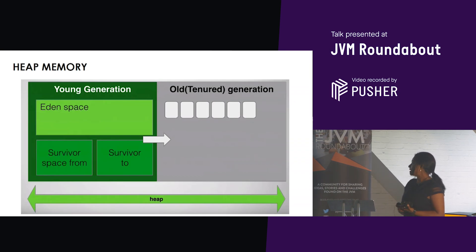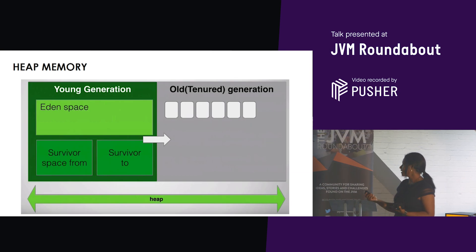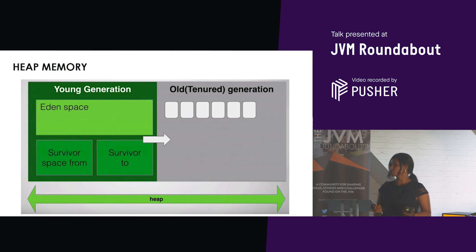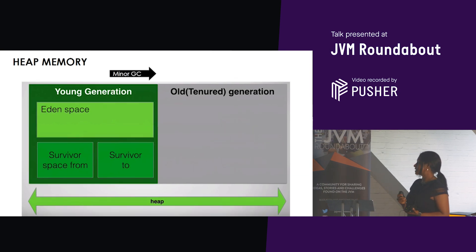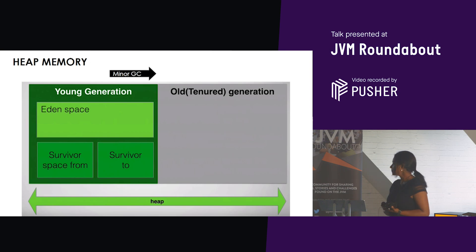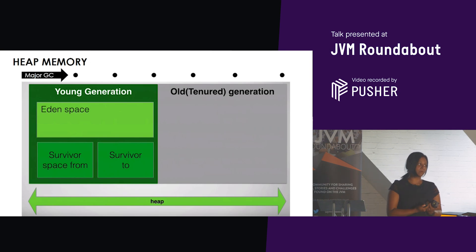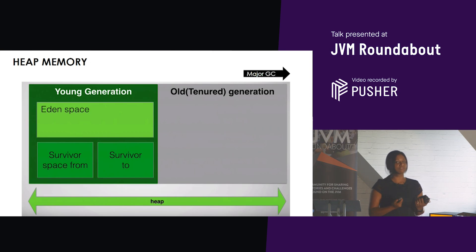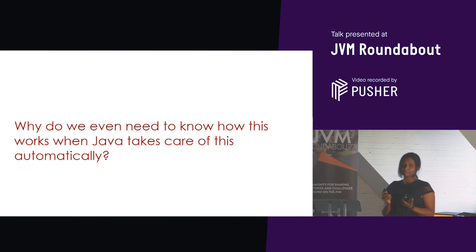They get moved to the old generation. The big difference between young generation and old generation, as the name suggests, is that young generation is for young, short-lived objects. Minor GC happens within the young generation only, so it happens more frequently and with less pause time. Whereas for the old generation, a major garbage collection kicks in. That happens across the heap from young generation all the way to the old generation, takes longer, and therefore has longer pause times and happens less frequently. Hopefully by now you have some overview of how the JVM's heap memory model works.